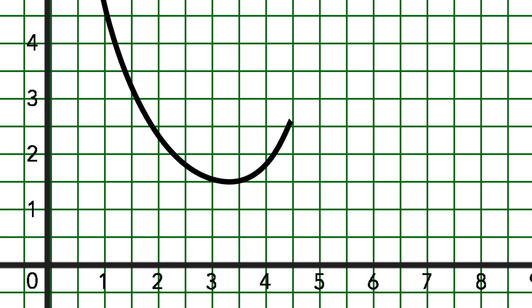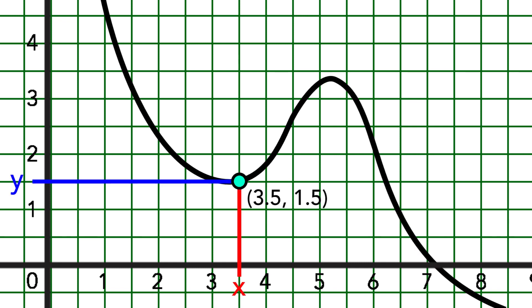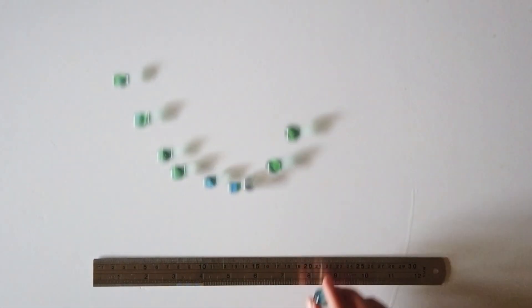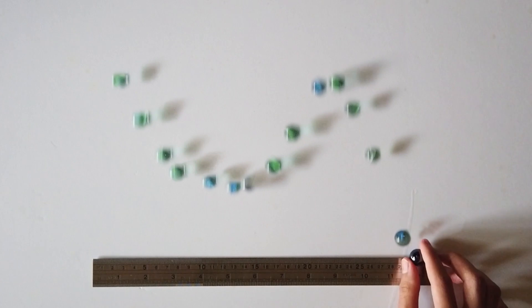If you recall, functions can be graphed like this, where every point on the curve has an x value and y value. The only requirement for it to be a function is if for every x value there is only one y value.